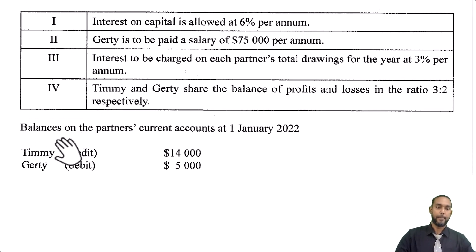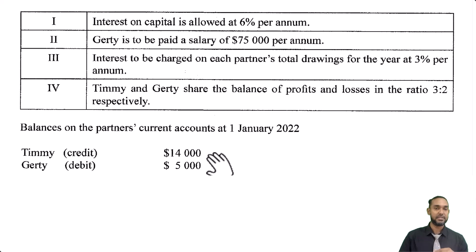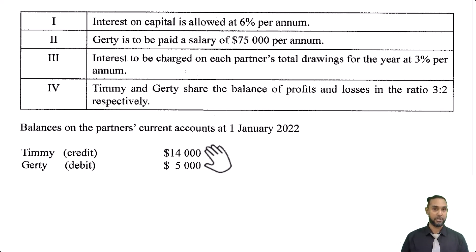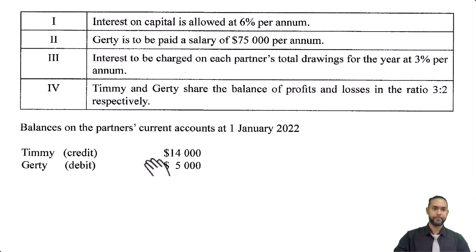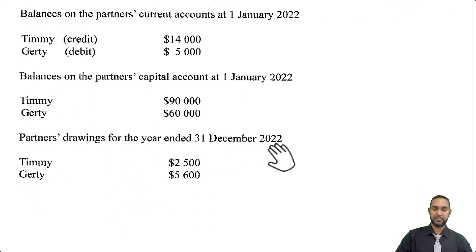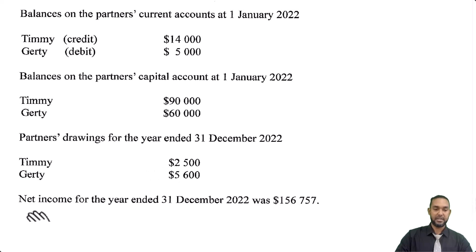So some more information. Balances on the partner's current accounts at 1 Jan 2022: Timmy, credit $14,000; Goethe, debit $5,000. Current accounts house the earnings and withdrawals details of the partners — we don't put them in the capital accounts unless specifically stated. Credit balances show you've earned more than you've withdrawn, so you have a surplus. Debit balances show you've withdrawn more than you've earned, meaning you have a deficit. Balances on the partner's capital accounts at 1 Jan 2022: Timmy $90,000, Goethe $60,000. Partner's drawings for the year ended 31 December 2022: $2,500 and $5,600. The net income for the year ended 31 December 2022 was $156,757.